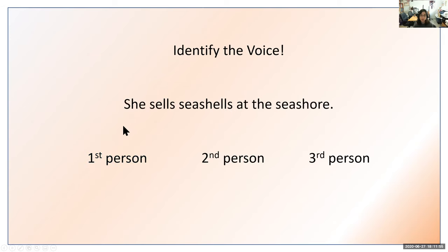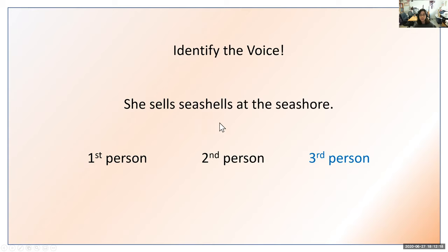How about this one — also a tongue twister: She sells seashells at the seashore. Is this first person, second person, or third person? If you said third person, you are correct. He, she, it — those are all third person. I could have said they sell seashells at the seashore and it still would have been third person.